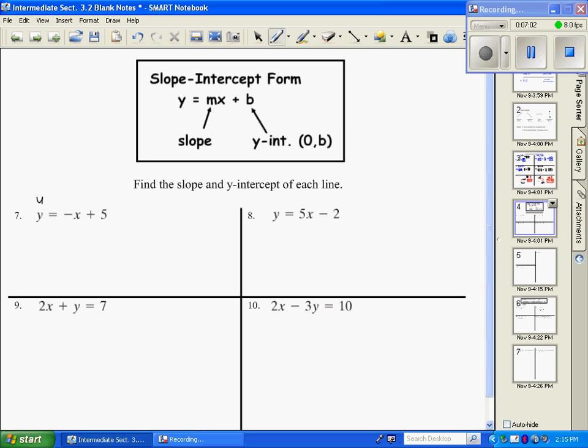Well, if I wrote my original formula, y equals mx plus b, it makes it pretty easy to see that the m in this one is negative 1. Your m is a known negative 1. And your b is 5. So as an ordered pair, the y intercept is 0, 5.